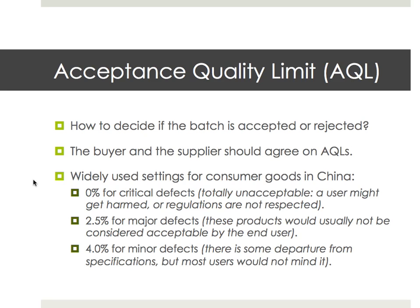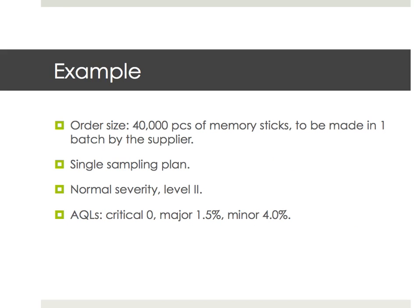AQL stands for acceptance quality limit, and it should be agreed on by the supplier and the buyer before the inspection — those are the rules of the game. Usually for consumer goods in China, three different types of defects are considered: critical defects, major defects, and minor defects.